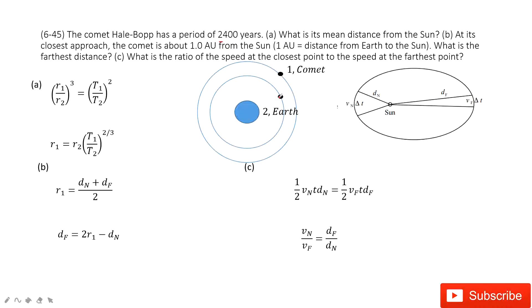And also, we know the distance from the Earth to the Sun. Do you agree? In this case, we can find the distance from the Sun to this comet. So we can see Kepler's third law.